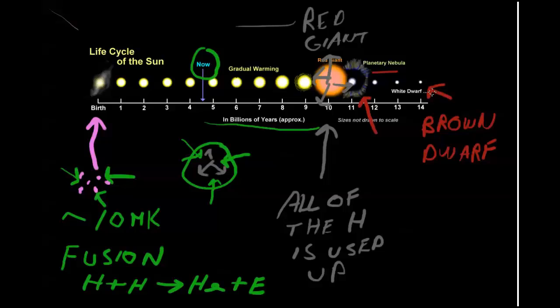And eventually that material is all going to get used up. And you're going to be left with pretty much a very very dense rock if you will, called a brown dwarf. So this is the life cycle of the sun and it holds for many of the main sequence stars. So we'll catch you on the next one and let's talk to you later.